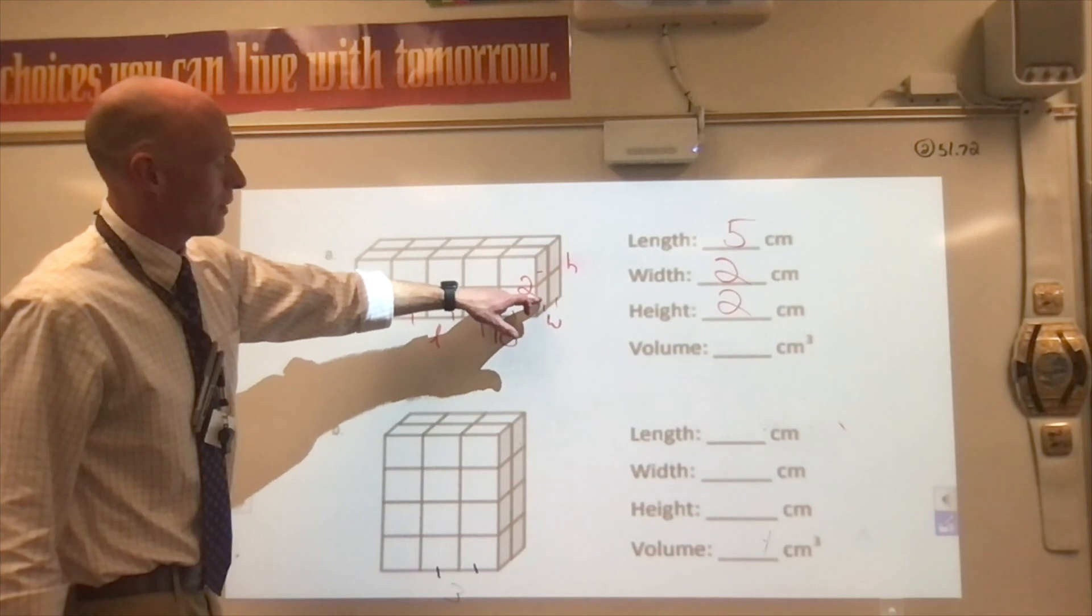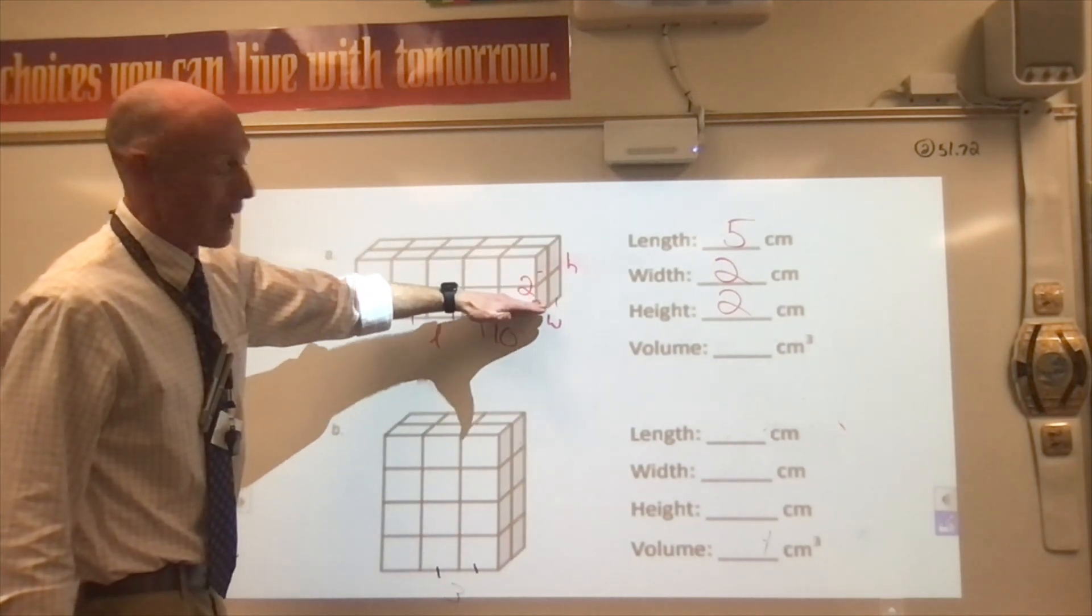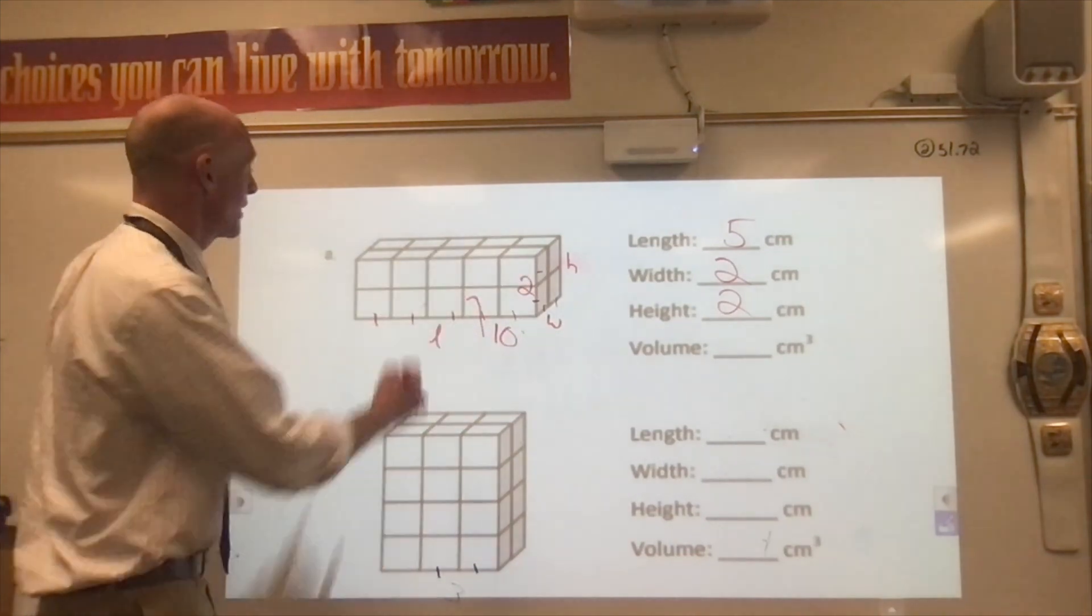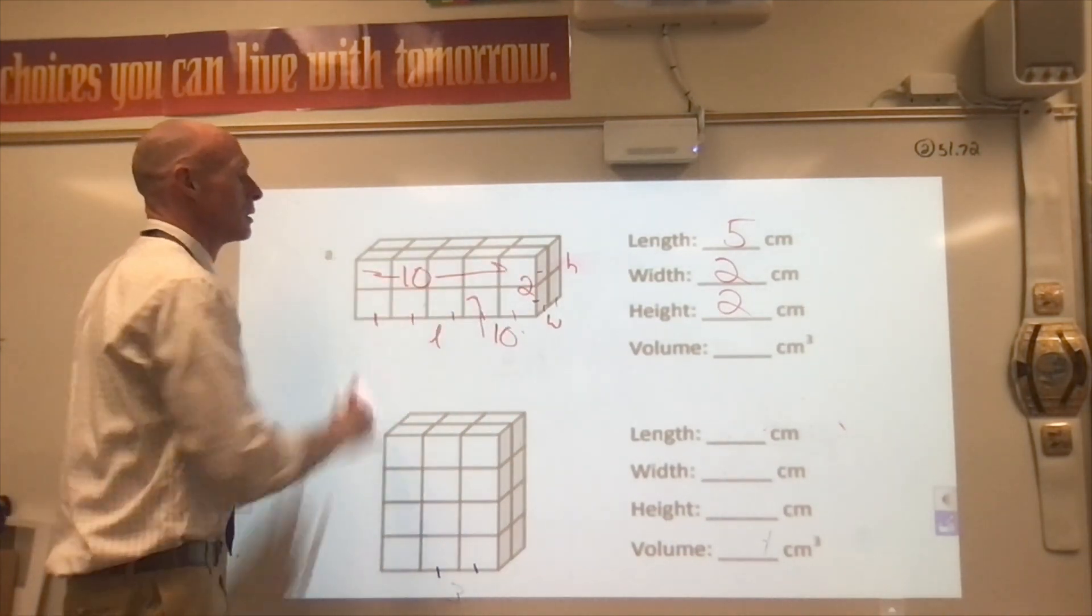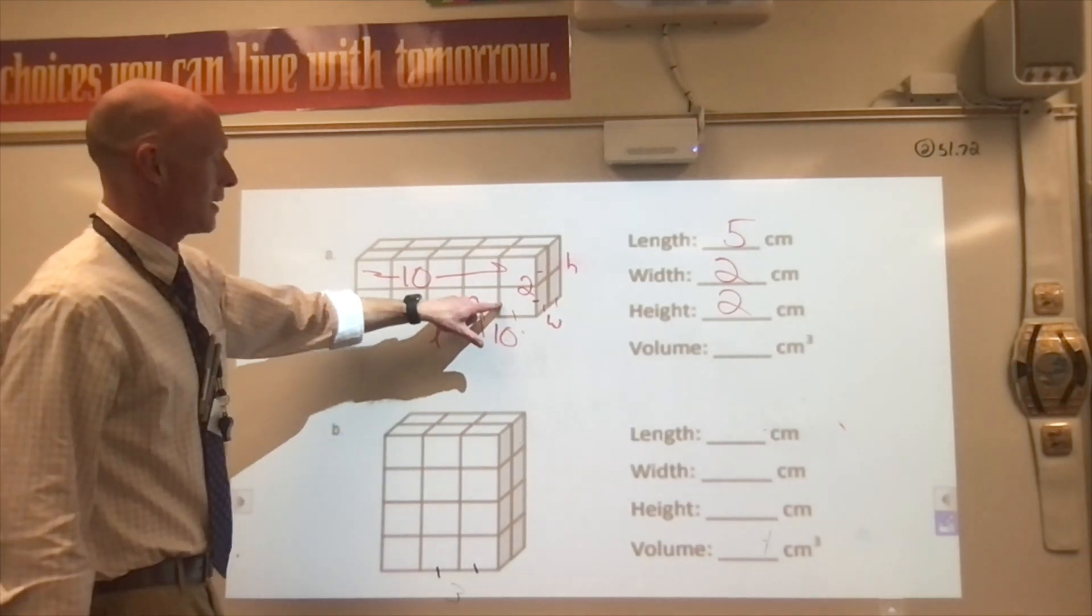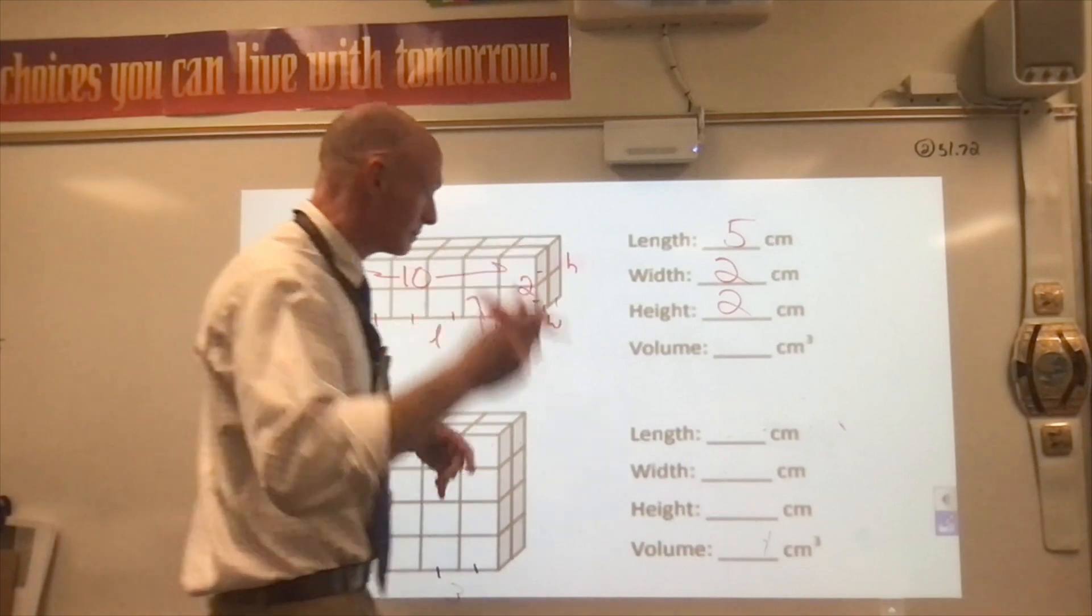And how many layers are there? There's not one layer. There's two layers. If that one has ten, this one also has ten. So if we have ten here and ten here, put them together. Ten plus ten.